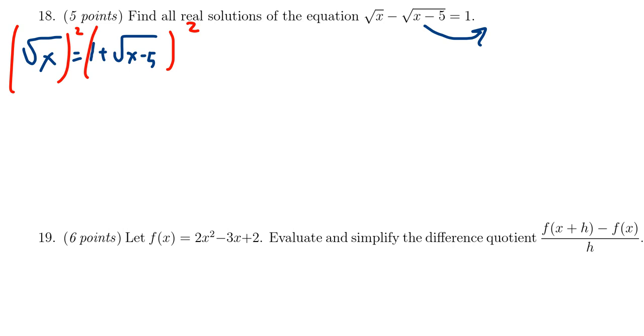On the left-hand side, if you square the square root of x, you'll end up with just an x. On the right-hand side, you do have to foil this thing. Because this is 1 plus the square root of x minus 5 times 1 plus the square root of x minus 5. So when you foil that out, you'll get 1 plus 2 times the square root of x minus 5. And then you add to that, you'll get the square root of x minus 5 squared, which is x minus 5 itself.